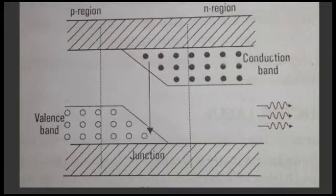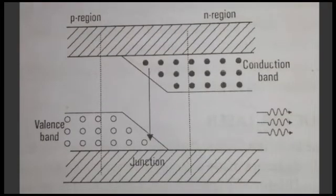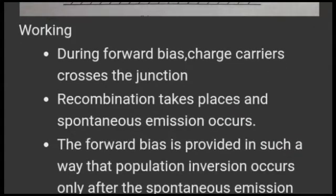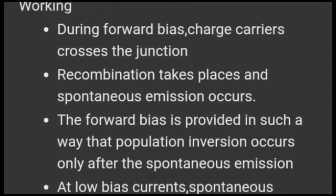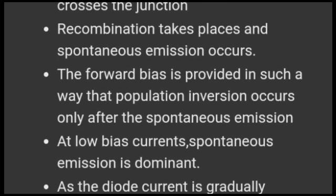At the junction, the N-region electrons and P-region holes recombine. Charge carriers cross the junction under forward bias, and recombination takes place, resulting in spontaneous emission. The forward bias is provided in such a way that population inversion occurs.